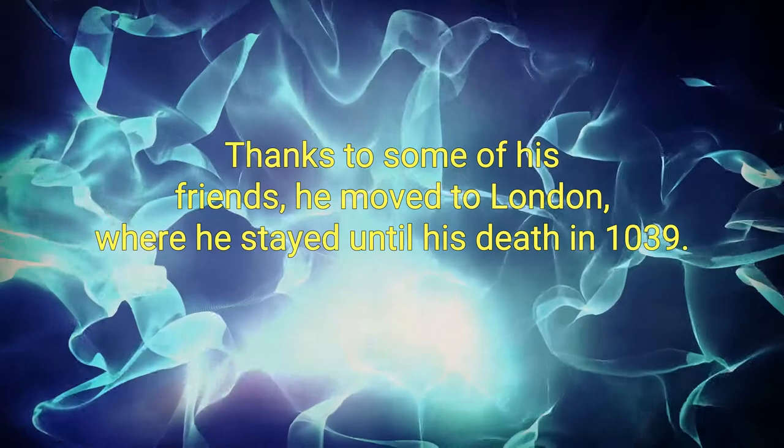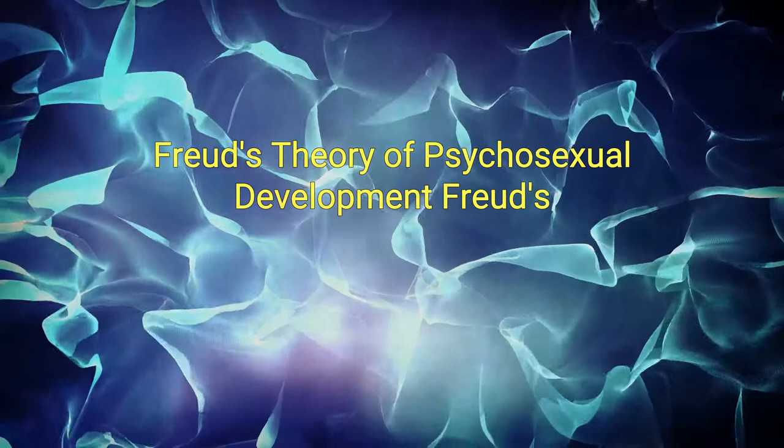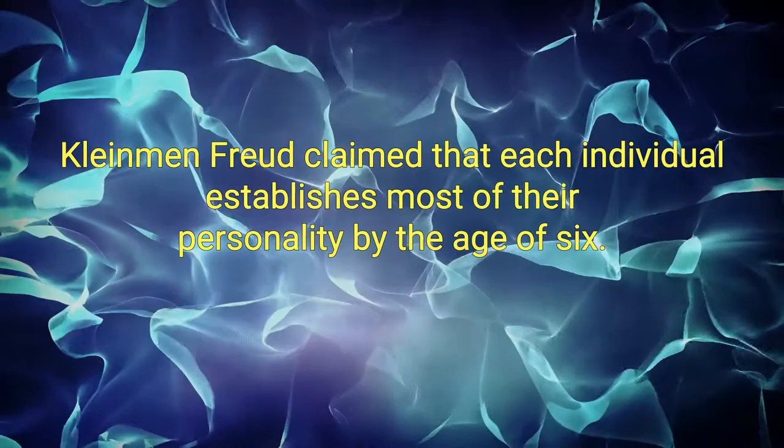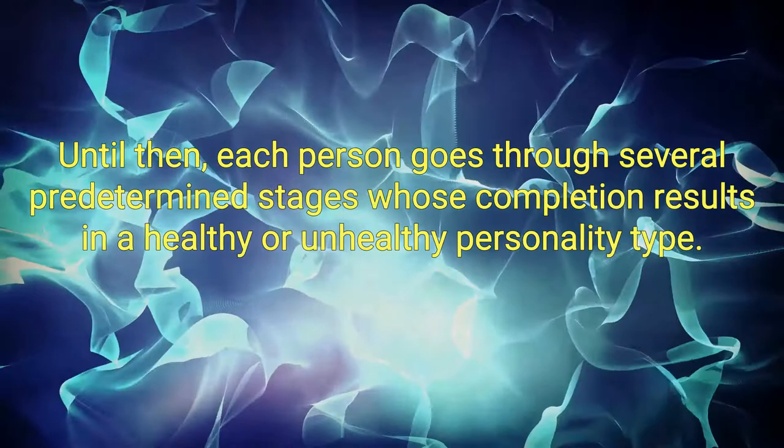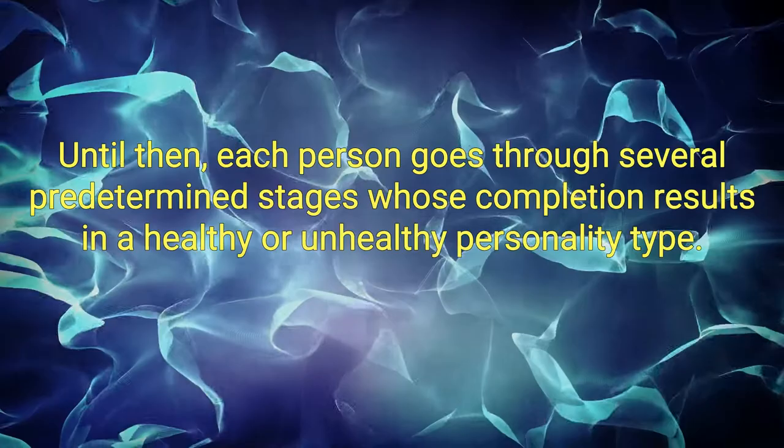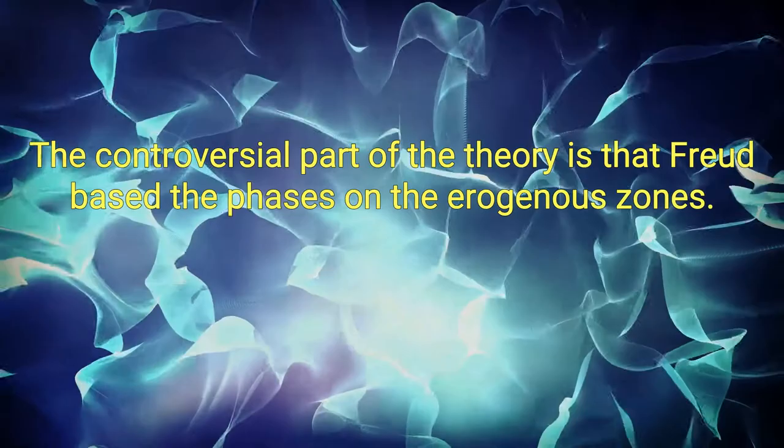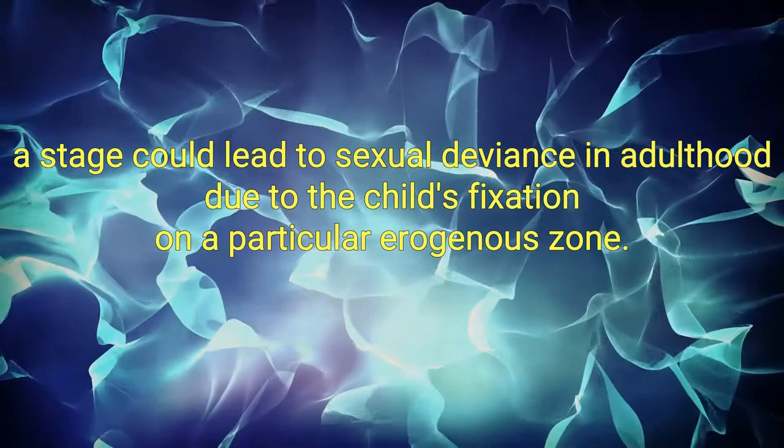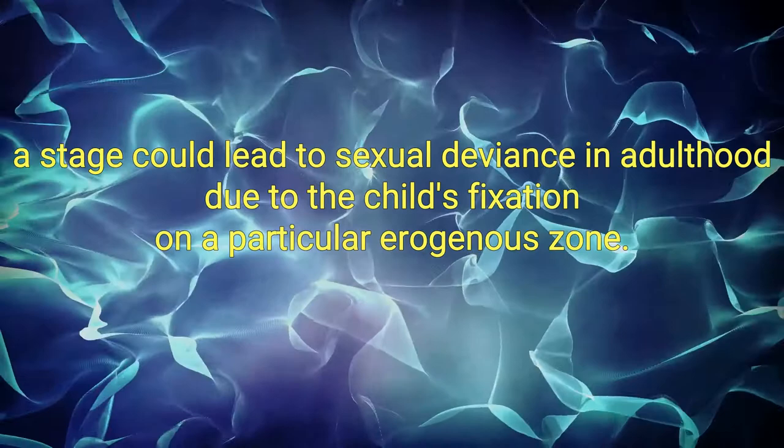Freud's Theory of Psychosexual Development. Freud's Theory of Psychosexual Development is one of the most well-known and controversial theories in psychology, writes Kleinman. Freud claimed that each individual establishes most of their personality by the age of six. Until then, each person goes through several predetermined stages whose completion results in a healthy or unhealthy personality type. The controversial part of the theory is that Freud based the phases on erogenous zones. According to him, a person's failure to complete a stage could lead to sexual deviance in adulthood due to the child's fixation on a particular erogenous zone.